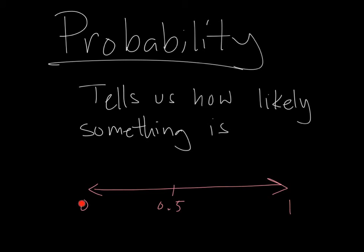The probability values can range from 0, a probability of 0 means that something is impossible, to a probability of 1 or 100%, and that means that event is certain to happen, and it can be any value in between. A probability of 0.5 means it's just as likely to happen as it is to not happen.